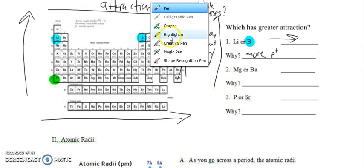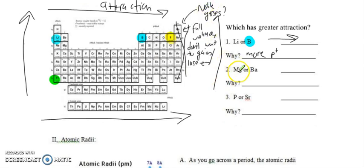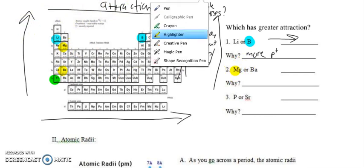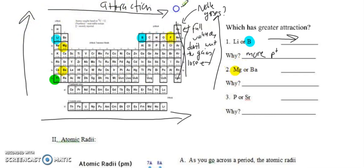Now let's take a look at another one — magnesium and barium. Here is magnesium and here is barium. This time they're in the same vertical column, the same family. Magnesium is higher up, barium is lower down. So which one has greater attraction? It's going to be magnesium. Why? Because it's higher up so that the electrons are closer to the nucleus.